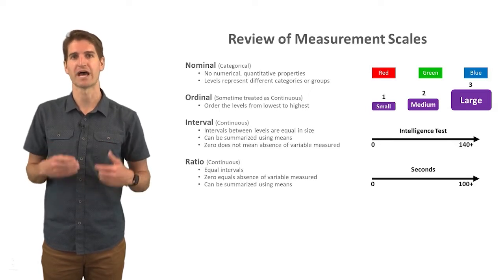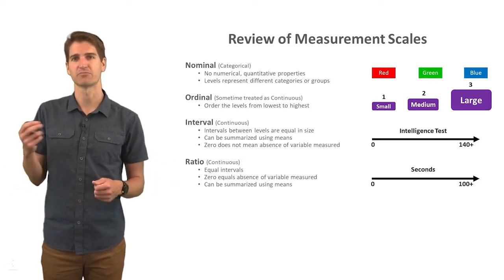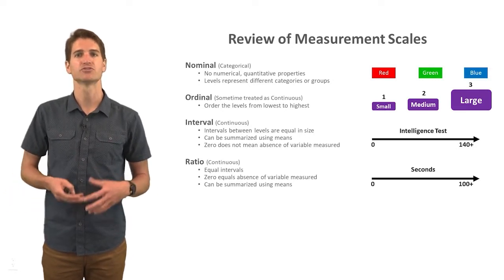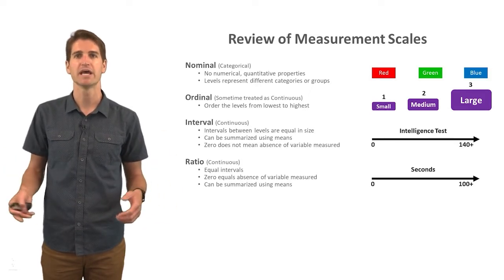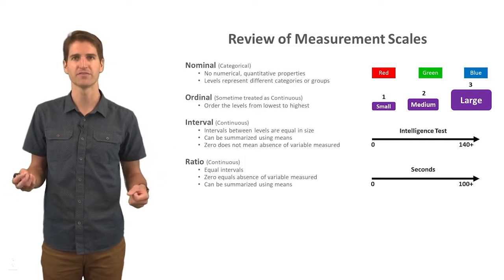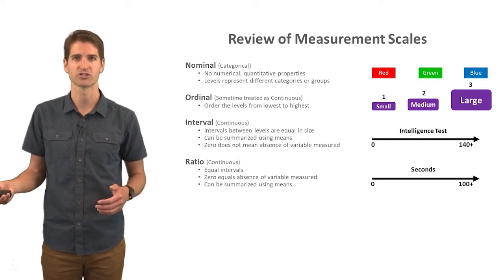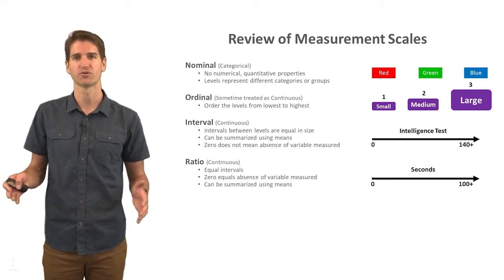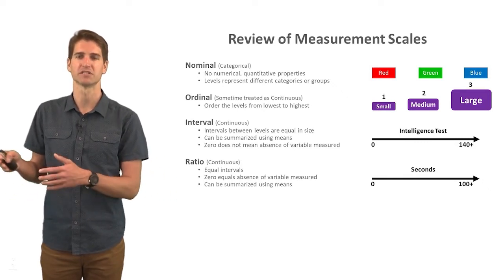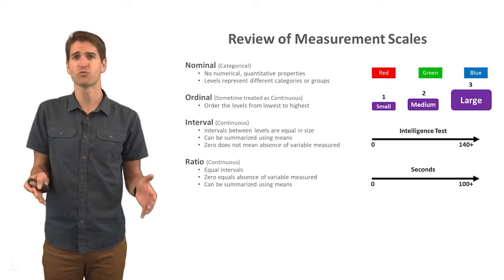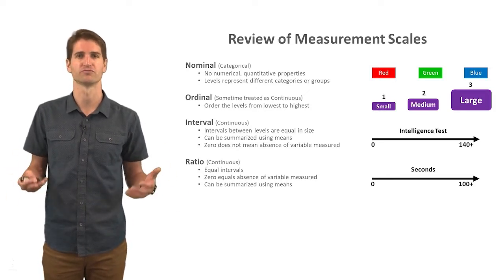The next three measurement scales — ordinal, interval, and ratio — imply that we have order. Ordinal is like a categorical variable, but we have assigned some type of order to the different levels within that variable. For example, we might have small, medium, and large, and we can apply a rank order number to them such as one, two, and three. What we don't know is the interval or the space between the different levels — is it an equal space between small and medium as it is between medium and large? So we don't know the actual size of the intervals with an ordinal measurement scale.